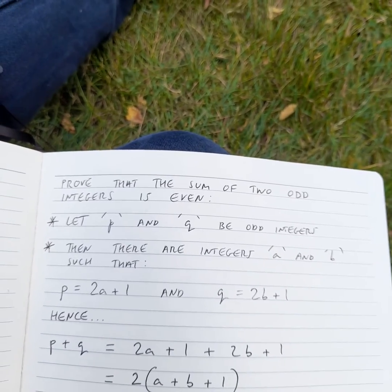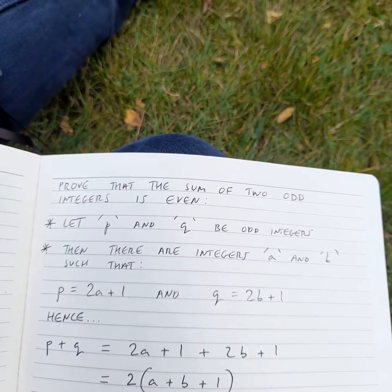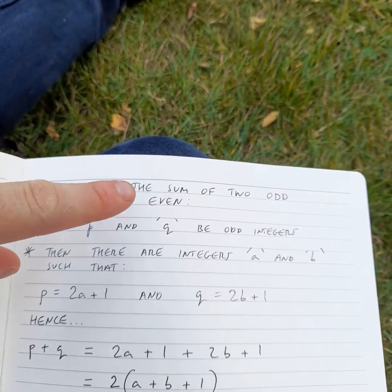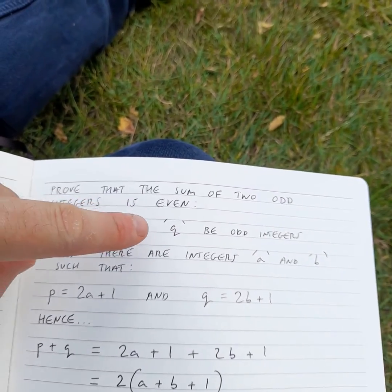This is another basic mathematics proof. Here I'm going to demonstrate that the sum of two odd integers is even.